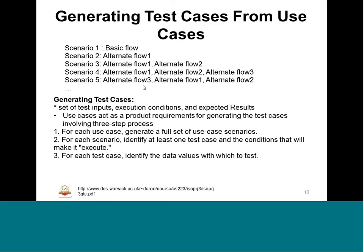The basic steps for generating test cases from use cases: for each use case, generate a full set of use case scenarios; for each scenario, identify at least one test case and the conditions that will make it execute. For the test case, identify the data values — the objects or inputs used for testing. The data values will also have an expected output as well as the actual output produced when the test case is executed.